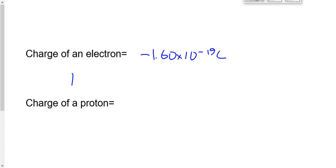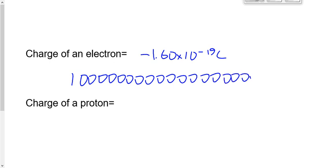It takes a lot of electrons to give us a coulomb — that means a coulomb must be a really, really big unit of charge. About 10 to the 19 electrons to make a coulomb of charge. What about the charge of a proton? You know that the charge of a proton is the same magnitude as the charge of an electron. So if an electron is negative 1.6, then a proton would be positive 1.6 times 10 to the minus 19 coulombs. It takes about 10 to the 19 protons to make a coulomb of charge as well.